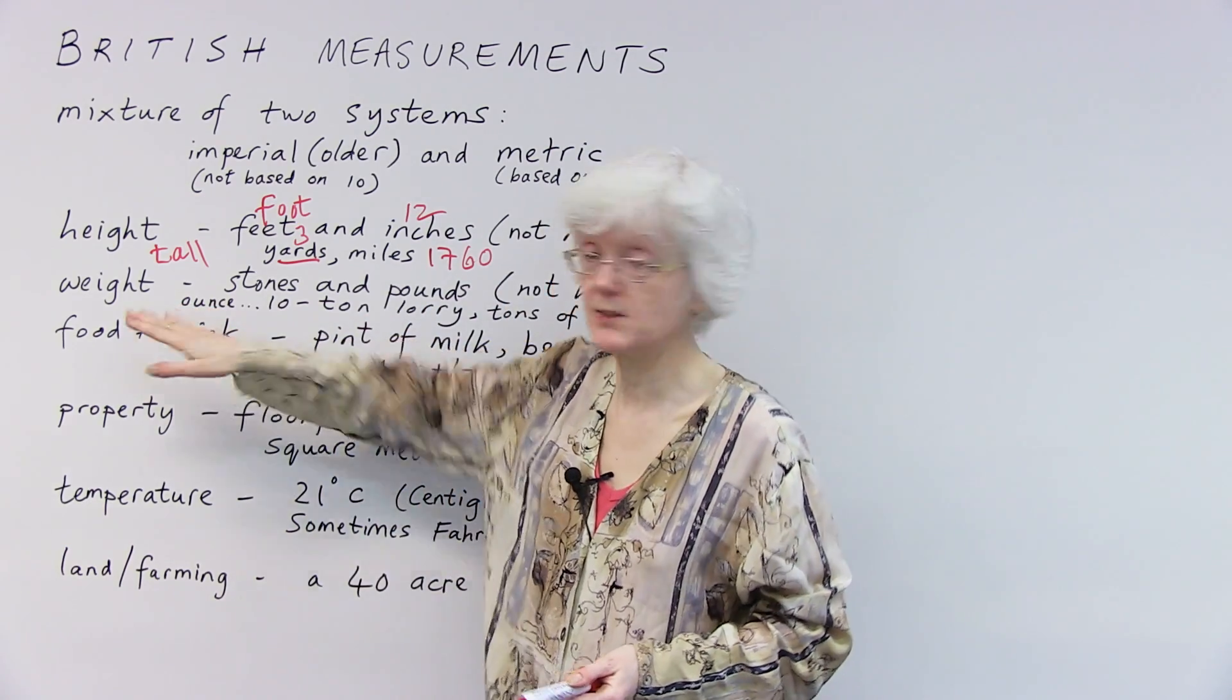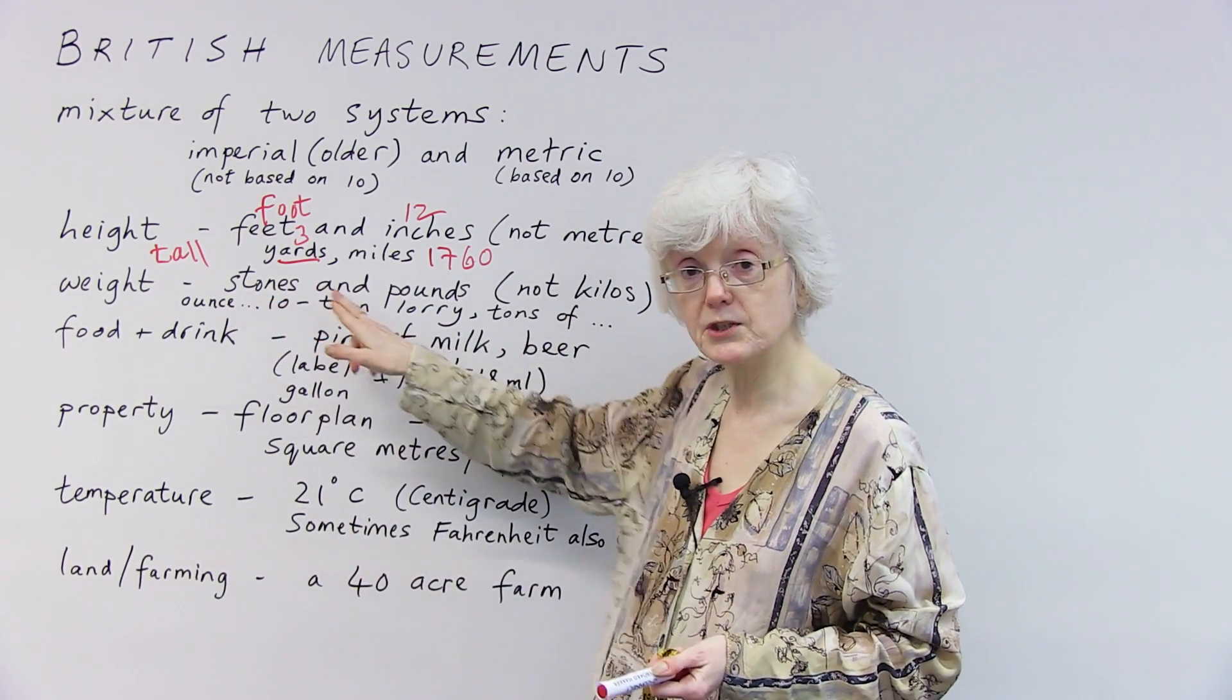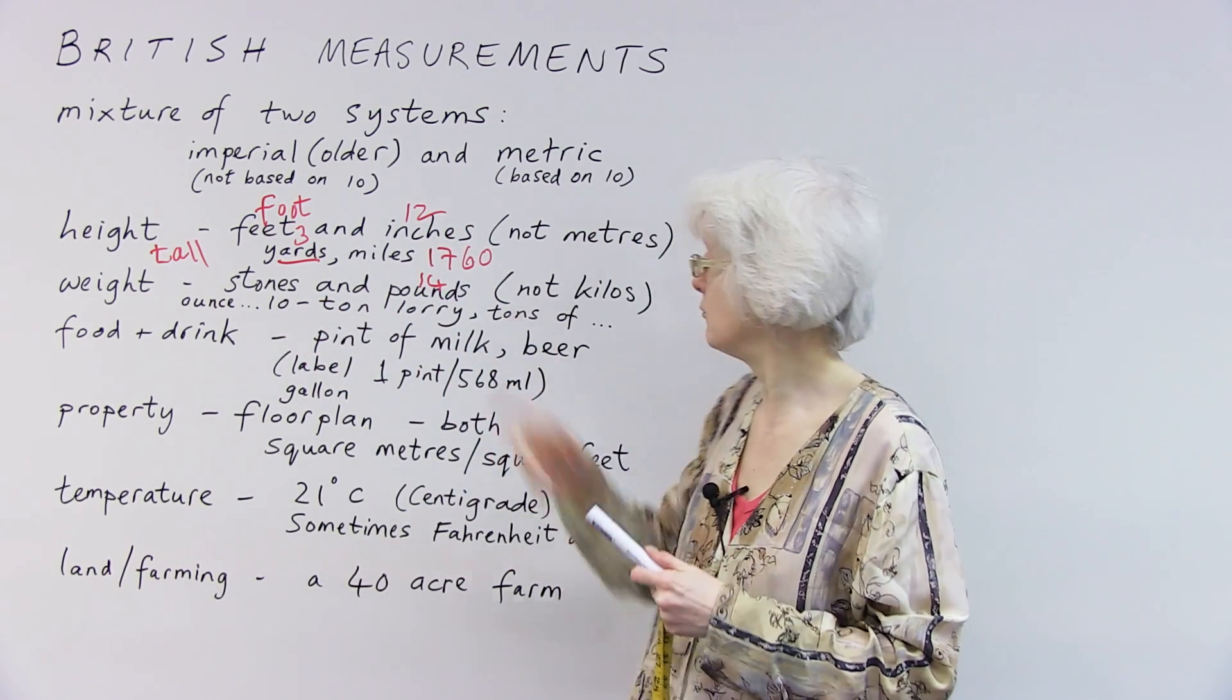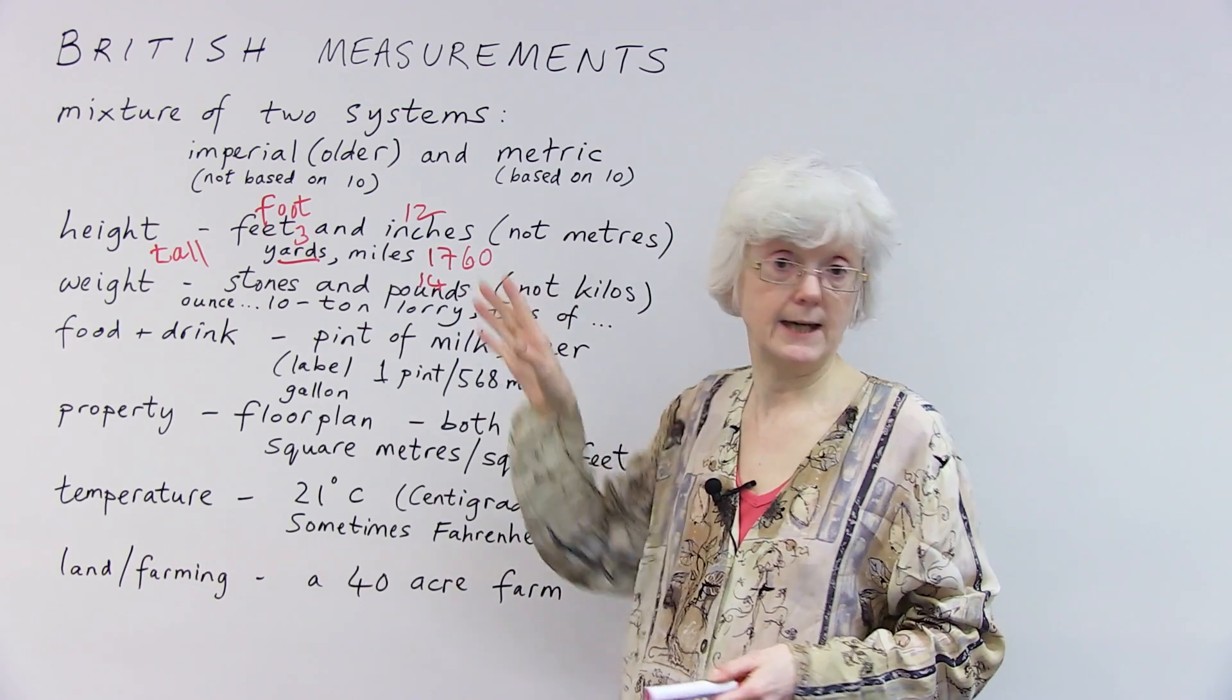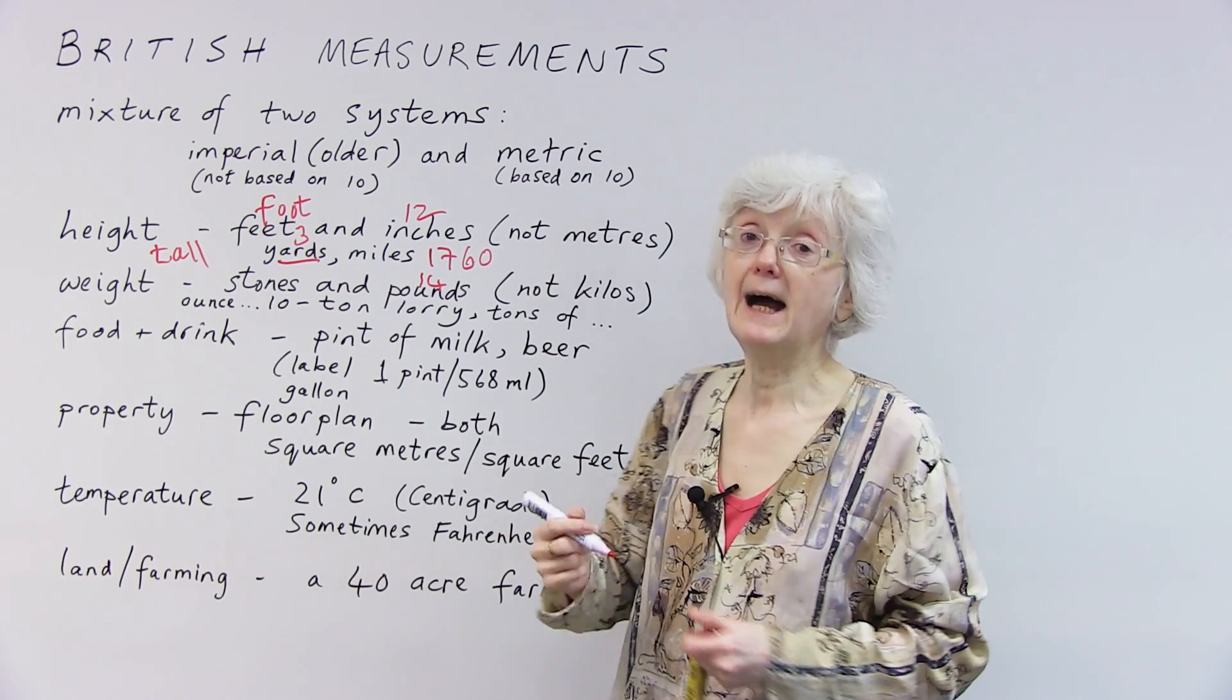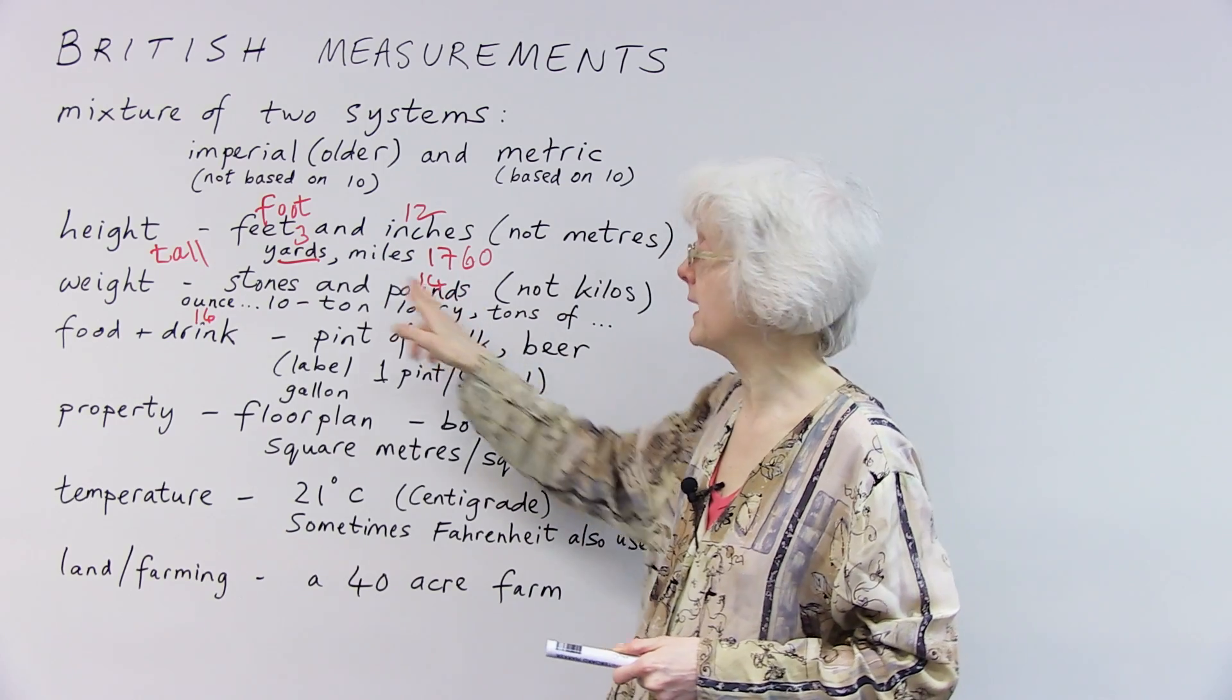So moving on to weight. What things weigh? The heaviness of things. What we use again in the UK, we have the weight in stones and pounds. And there are fourteen pounds in a stone. So again, a random number. Fourteen pounds in a stone. So we don't use kilos, which I'll use mostly in the rest of Europe. Anything less than a pound. There's a smaller measurement called an ounce. And there are sixteen ounces in a pound. So there's another different number. Sixteen ounces in a pound, fourteen pounds in a stone.